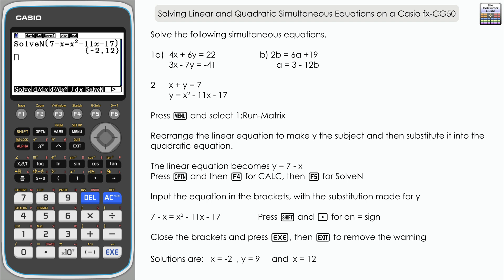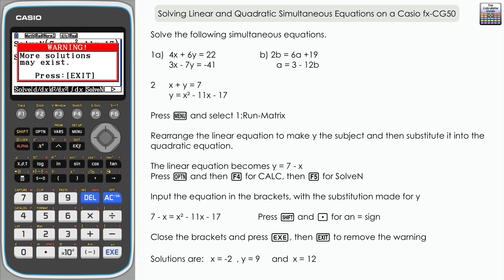I'm going to show how the calculator can handle the second case, in case you have bigger figures or just want to use it. Use SolveN again — for the second x value of 12, I'll use x as the unknown since the calculator solves for x more readily. So: 12 plus x equals 7, close the brackets, exit the warning, and here we have the y value: negative 5. So x equals 12 and y equals negative 5 go together.